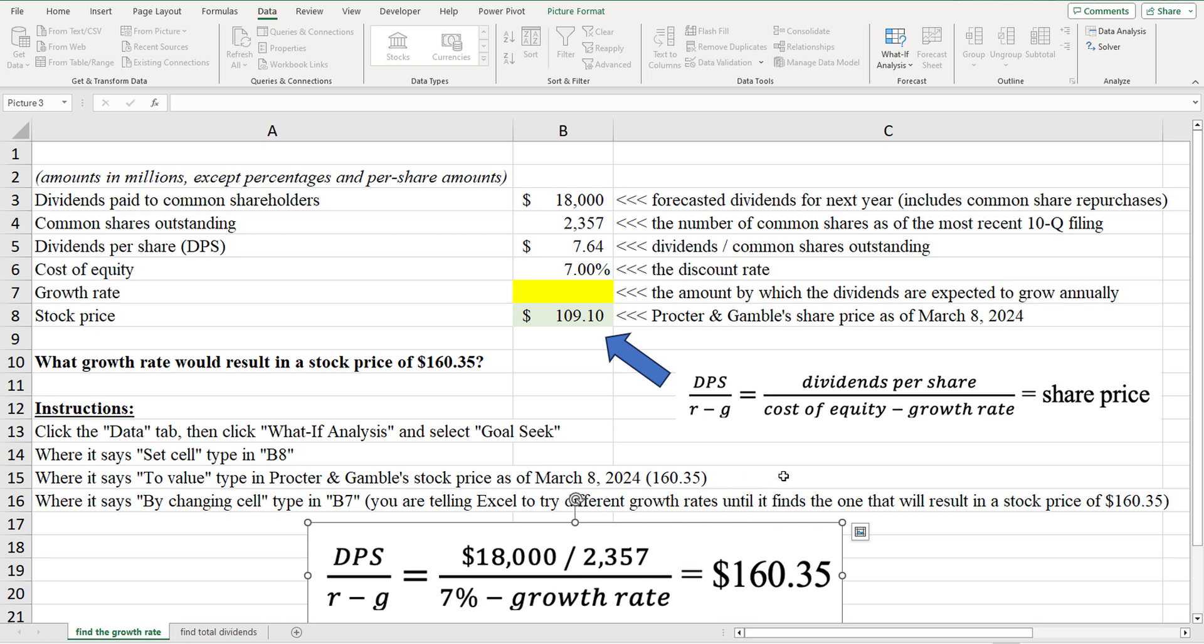So we know the share price. We know the, well, we believe we know the forecast of dividends per share. We know the cost of equity, and we're going to try and back out what would be the growth rate. So here's how we're going to do this goal seek to back out the growth rate.